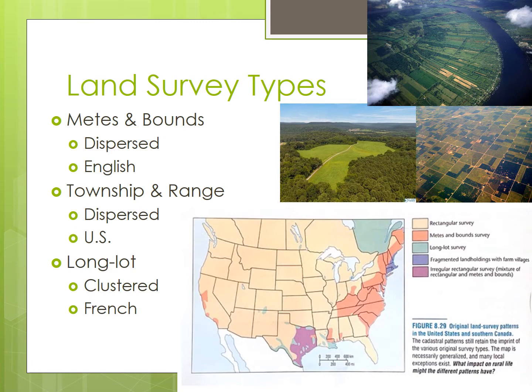In parts of the east coast of the United States, we see the metes and bounds system. This surveying system uses natural features such as trees, boulders, and streams to lay out property lines. Metes were used for short distances — like from the oak tree 100 yards north to the corner of the barn — while bounds cover larger areas based on larger features such as streams or roads. As a result, metes and bounds produce parcels of land that are irregularly shaped.